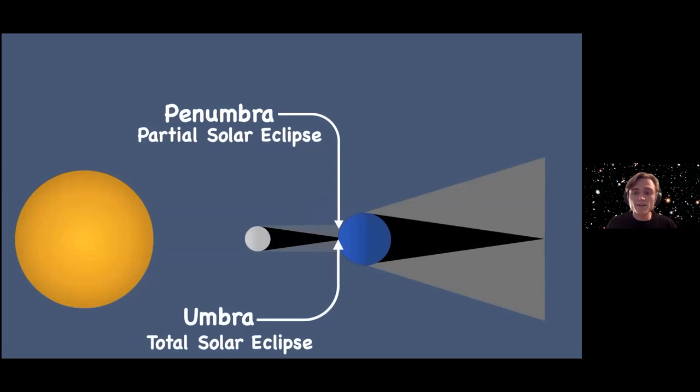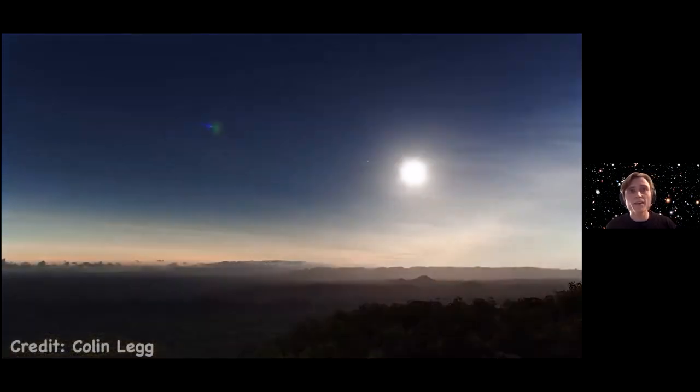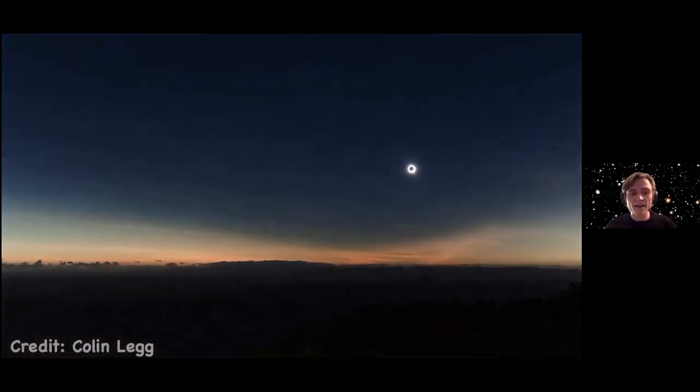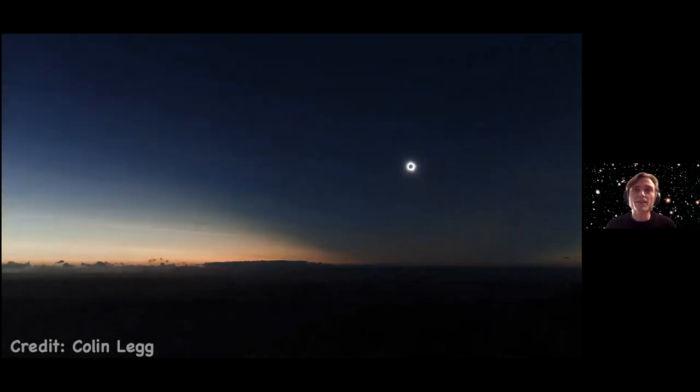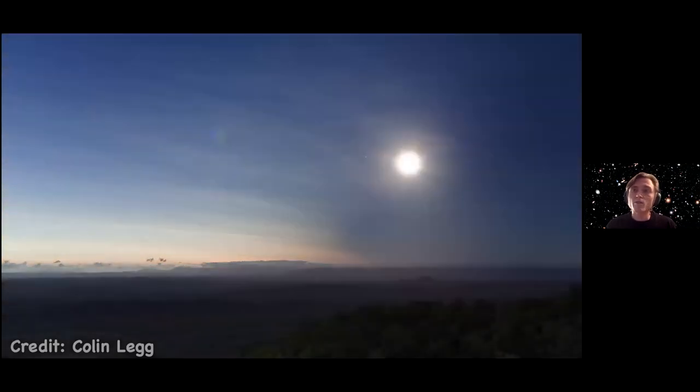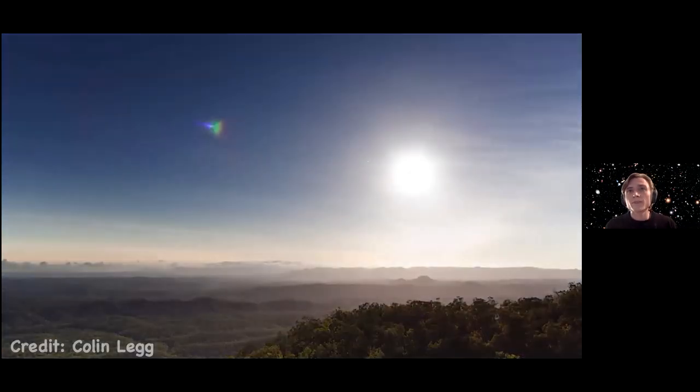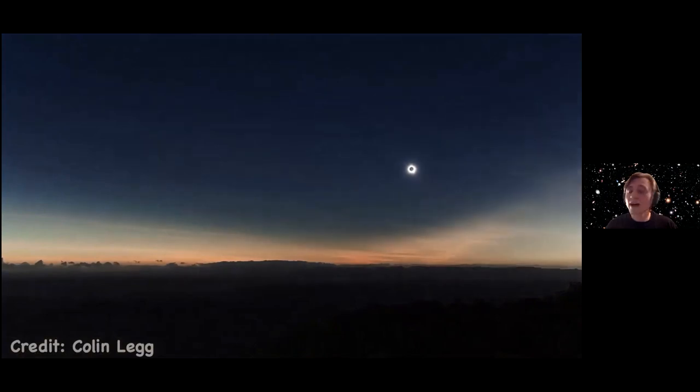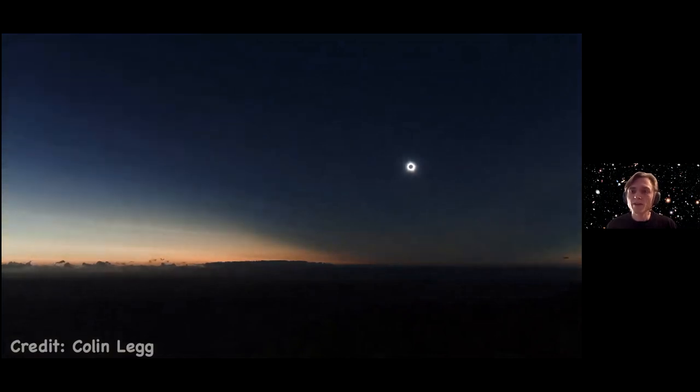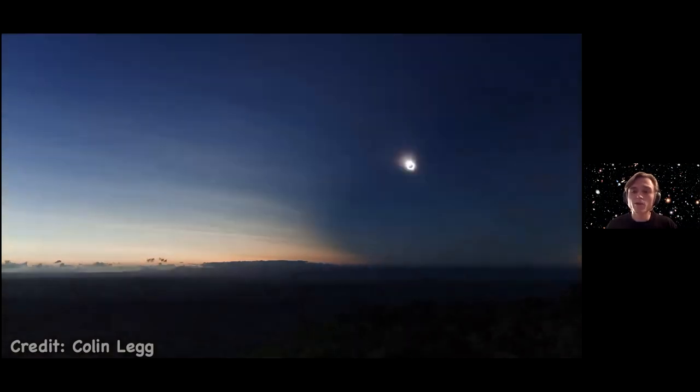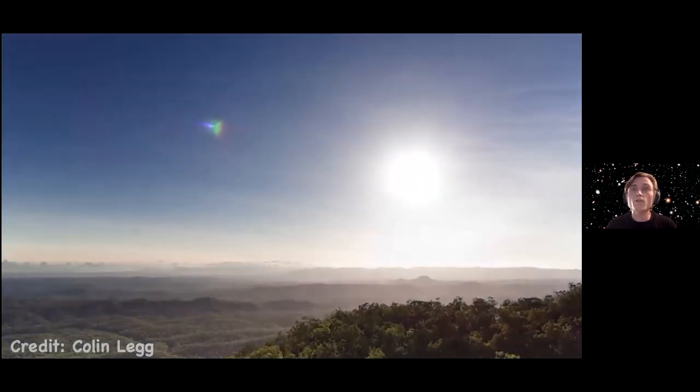So again, to show you what this would look like in real life, let's look at another amazing video from, again, Colin Legg. So this is a total lunar eclipse that happened in 2012 in the Northern Territory of Australia. And you can see that the moon blocks out the sun for a moment, then moves on again. So this is an incredible event that I haven't seen myself, but I'm often recommended to try and spot a total solar eclipse at some point. So while I'm going through this talk, remember to put your questions down in the comments if you have anything you want me to answer.